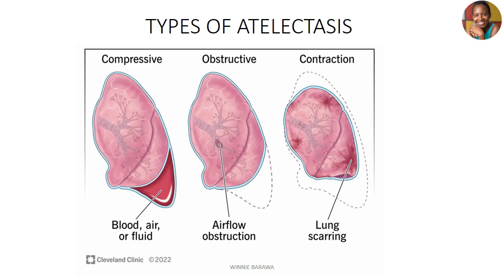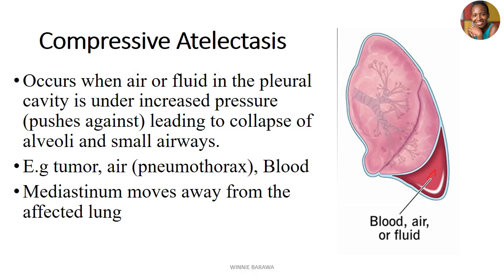Let's start with compressive atelectasis. Compressive atelectasis occurs when air or fluid in the pleural cavity is under increased pressure such that it starts to push against our lung tissue or against the walls of the lungs, causing the alveoli and small airways to collapse. What can push or compress against the lung could be tumors, air as in the case of pneumothorax, and in some cases blood that has clotted.